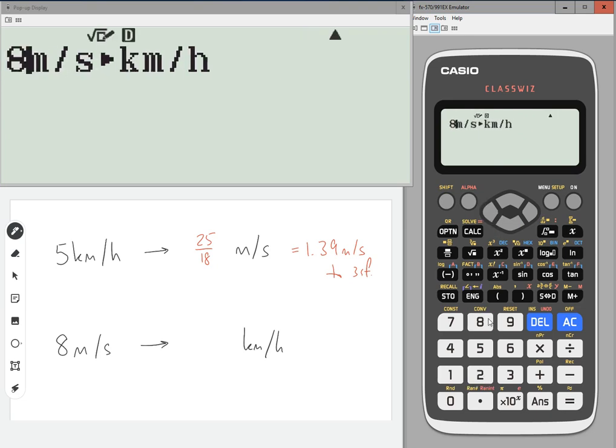Scroll left, go to 8, press equals, and we get 144 over 5.